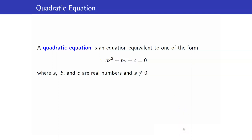Why do we want that the coefficient of x squared is not equal to 0? Because if a is equal to 0, then it will no longer be a quadratic equation. It will just be a linear equation.